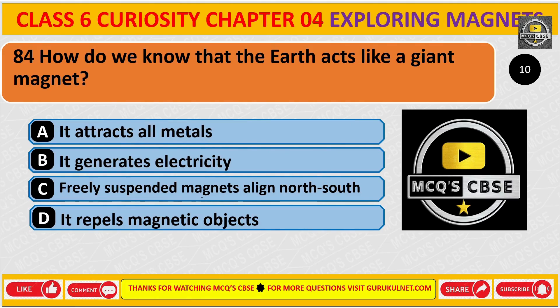How do we know that the Earth acts like a giant magnet? The correct answer is C. A suspended magnet aligns in the North-South direction.